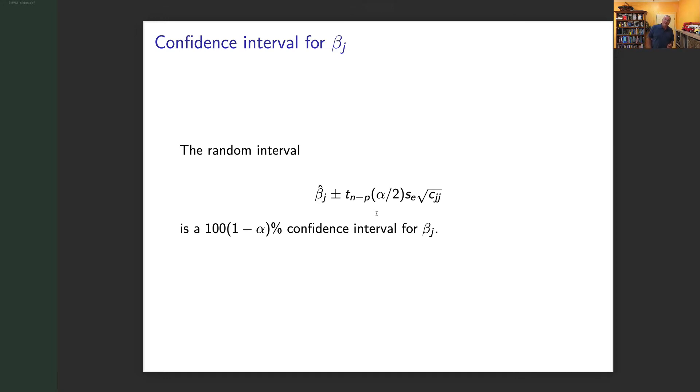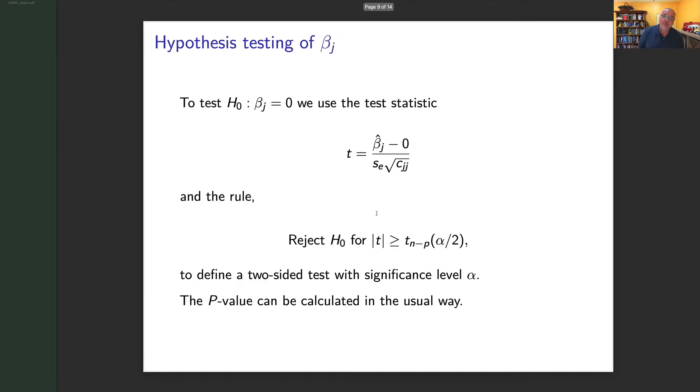For example, if I take β̂_j plus or minus a cutoff point—so t_(n-p, α/2), that is a t-distribution, it's the point on a t-distribution that has n minus p degrees of freedom such that the area at one end is α/2—times my standard error, my SE times the square root of c_jj, that's a 100(1-α)% confidence interval for β_j. And we'll see when we get to the case study, you just look on your coefficient table and it gives you those numbers.